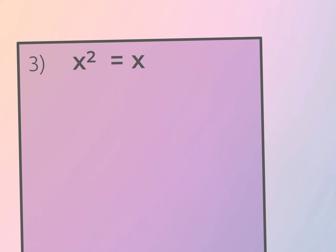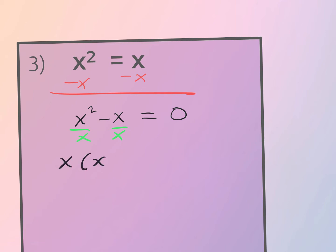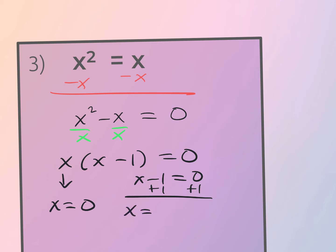For this one, I need to set my equation equal to zero by subtracting x from both sides, leaving x² − x = 0. I factor out a GCF of x to get x(x − 1) = 0. Setting each factor equal to zero: x = 0 and x = 1. Notice the highest power was two, so this gives me two solutions.